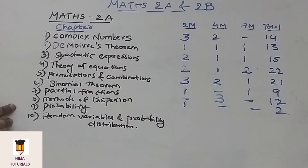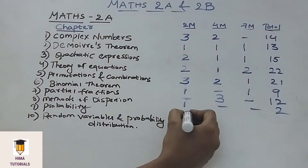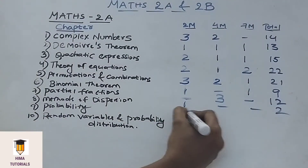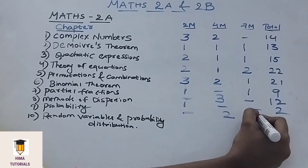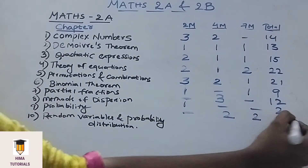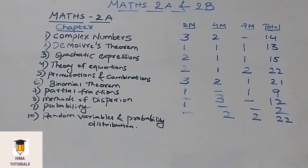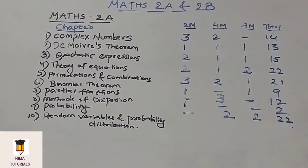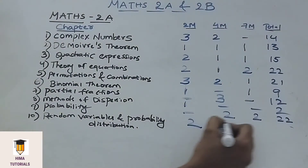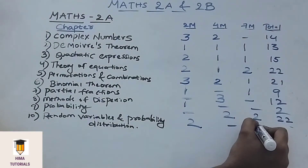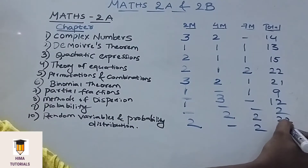Coming to the next important chapter in Maths 2A, that is Probability. In Probability, we get 2 four-mark and 2 seven-mark questions. This chapter also has high weightage. Coming to the last chapter, that is Random Variables and Probability Distribution. In this chapter, we get 2 two-mark and 2 seven-mark questions.